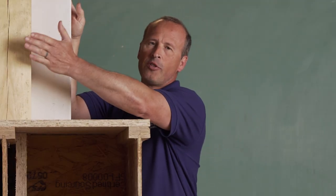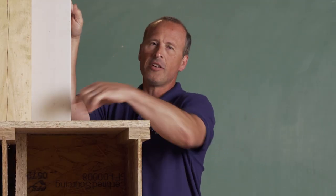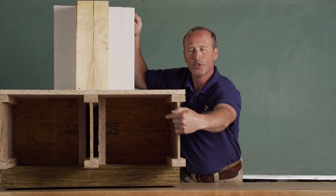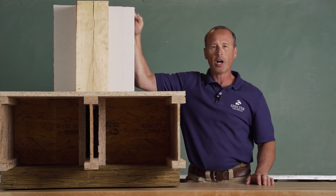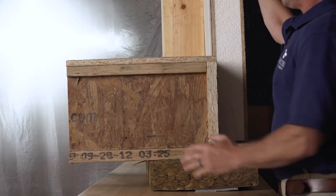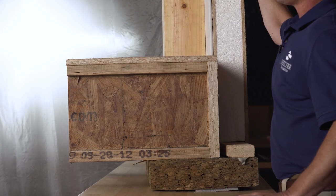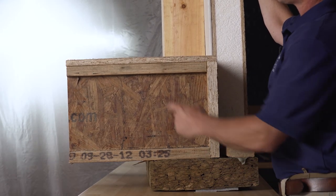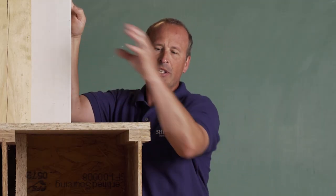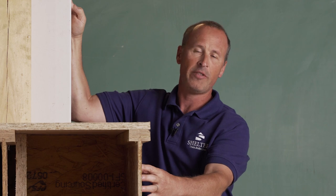We still need to transfer the gravity load of the post through the sheathing and down to the foundation. We do that with a solid pack out. So if you look inside there you can see that we've got solid blocking installed from the underside of the sheathing down to the sill plate. The I-joist manufacturer likes to see that blocking a sixteenth of an inch taller than the actual I-joist just to make sure that the weight of the post isn't ever able to crush the web of the I-joist.